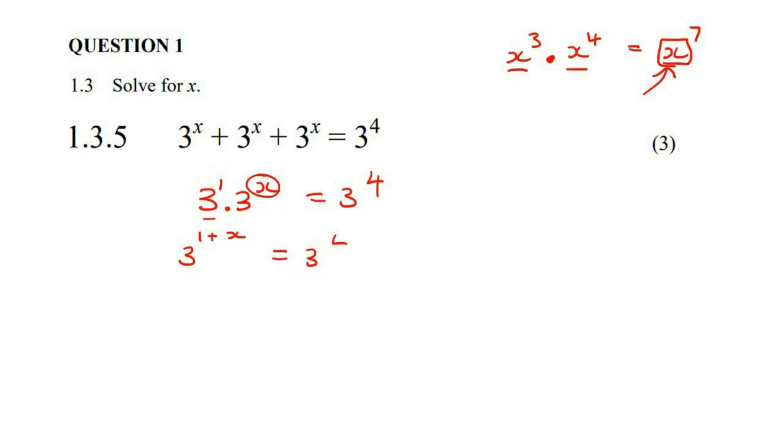And then we have 3 to the 4. Now we are in a good position, because on the left and the right, we have the same base. So we can cancel the base. Boom. And then you can just take the 1 to the other side, and so x is 3.